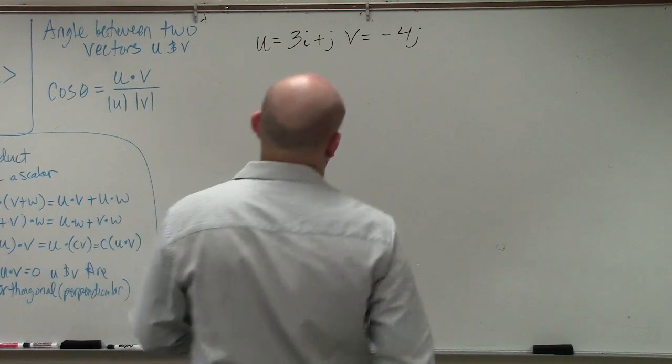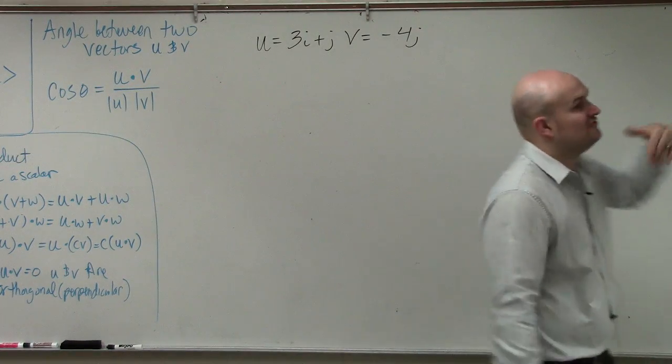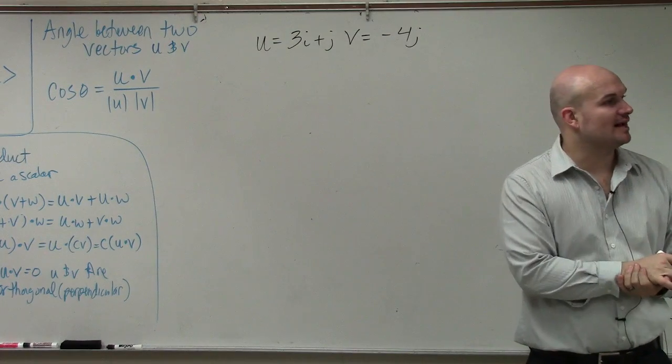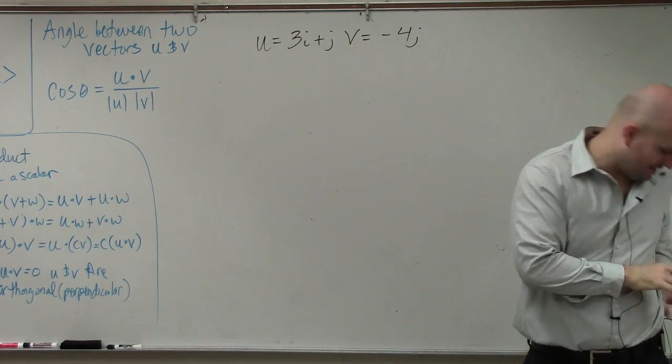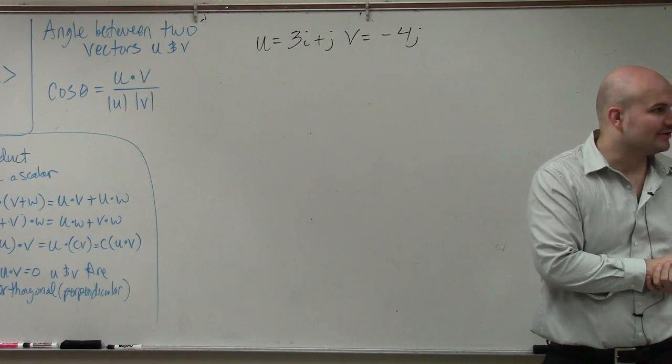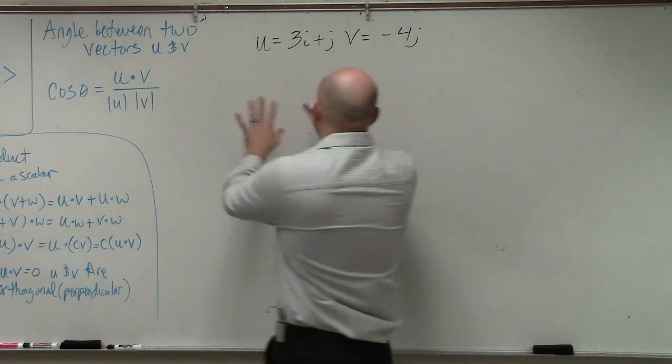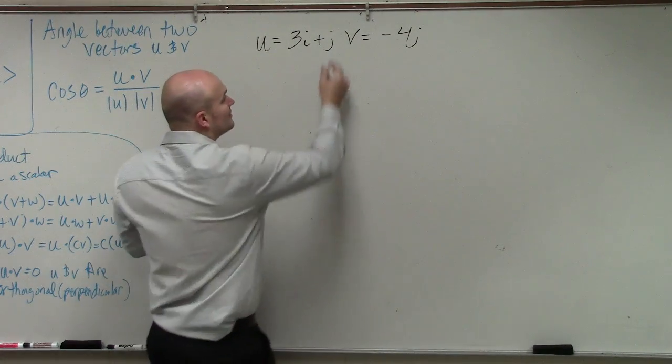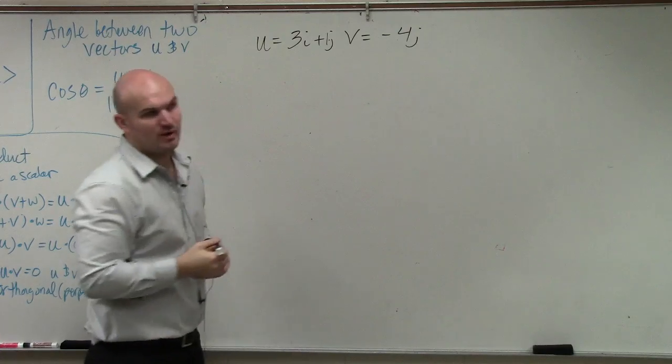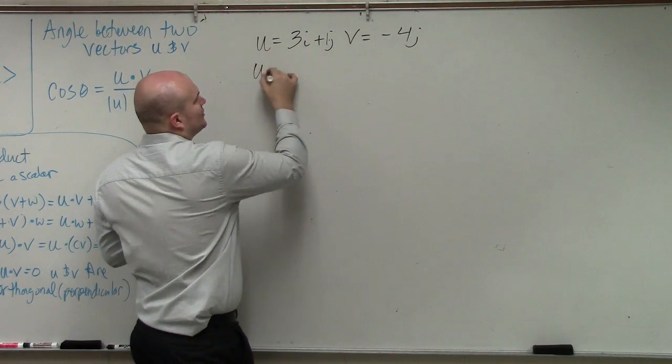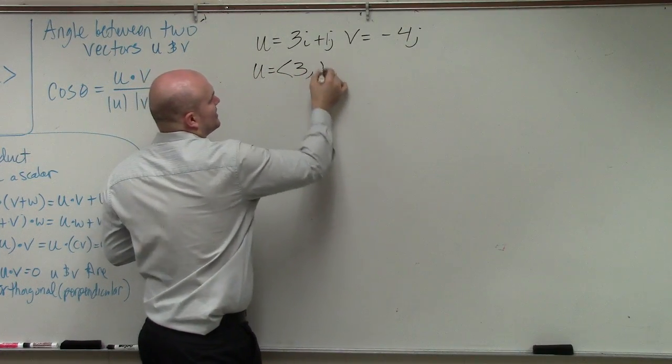In this one, we're looking for the angle between u and v. The important thing I'd like to do is rewrite this in component form. Right now they're in linear combination form. To rewrite u in component form, that would be 3 comma 1.